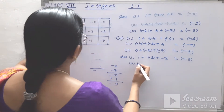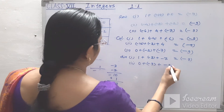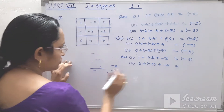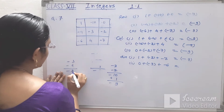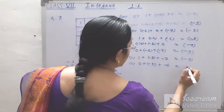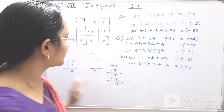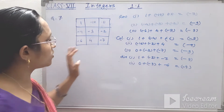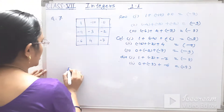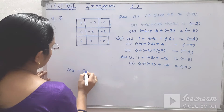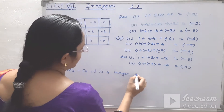Second diagonal: 0 plus minus 3 plus minus 6. Since 0 adds nothing, minus 3 and minus 6 gives minus 9. All rows, columns and diagonals have the same sum of minus 9, so it is a magic square.